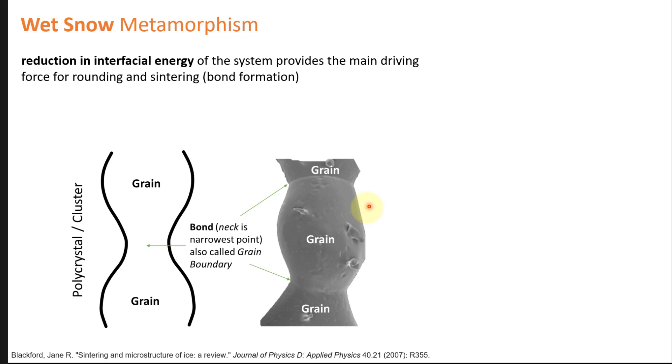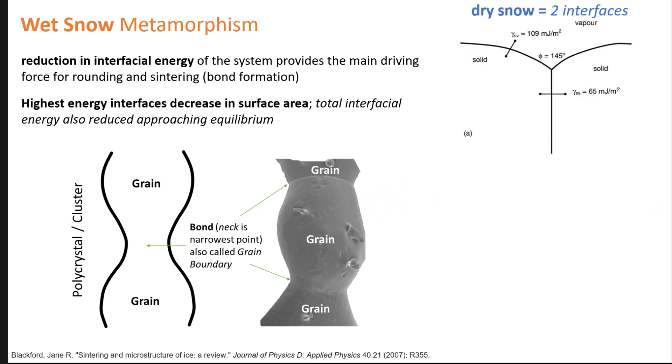When you have liquid water present, sintering and bonding can occur faster. With dry snow metamorphism, we have a picture that looks like this. In dry snow we have two interfaces. We have solid-solid interfaces with an interfacial energy of gamma SS, that's 65 millijoules per square meter of contact between grains. We have the solid-vapor interface, gamma SV, which has almost double the interfacial energy. We're trying to reduce that. One effective way to reduce solid-vapor interface energy is by making more solid-solid interface energies. That's the driving force for sintering or bonding in dry snowpack.